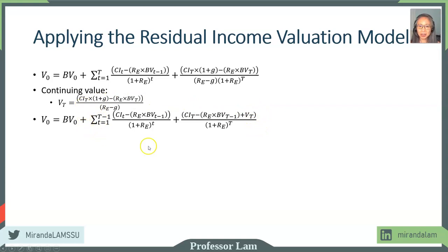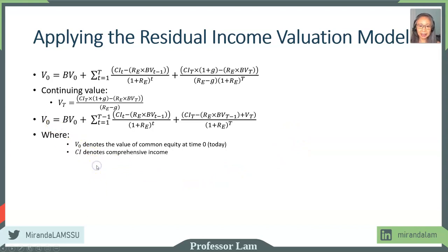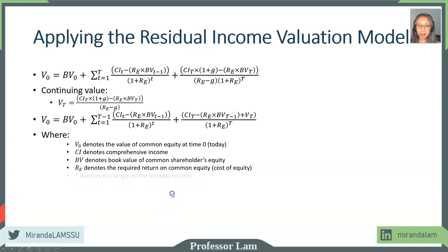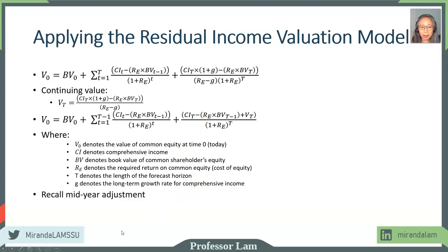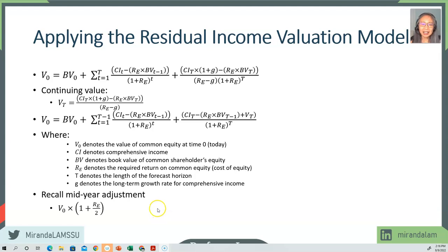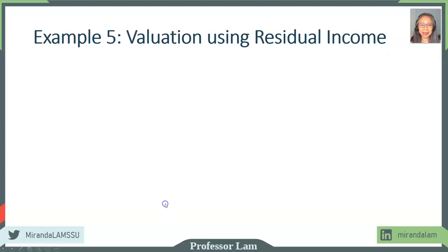This expression makes it easier to set up the model in Excel. The definition: V is the value today we are estimating; CI is comprehensive income; BV is book value; RE is the cost of equity or required return; T is our forecast horizon; and G is the long-term growth rate for comprehensive income. Remember, income does not always occur at the end of each year, so we will apply a mid-year adjustment — multiply the estimated value by one plus half of the cost of equity. We will do all this in Excel.